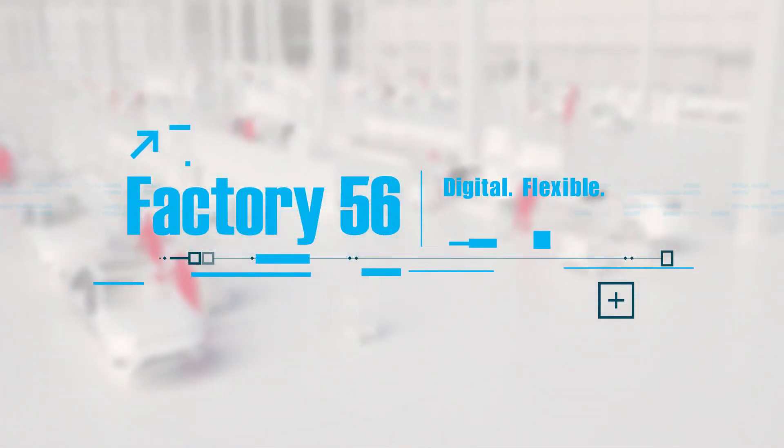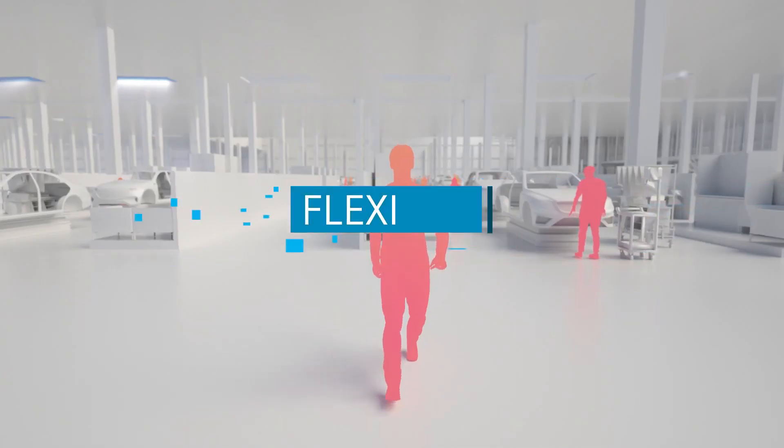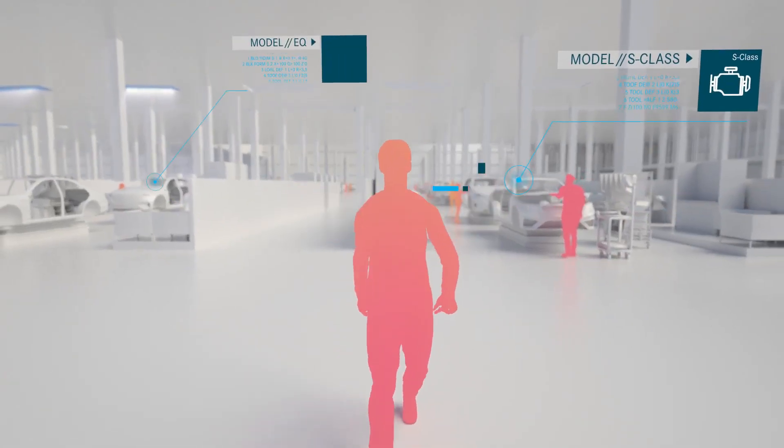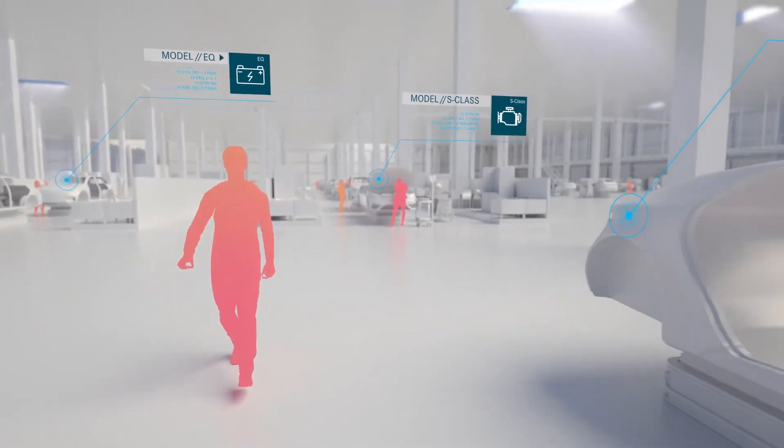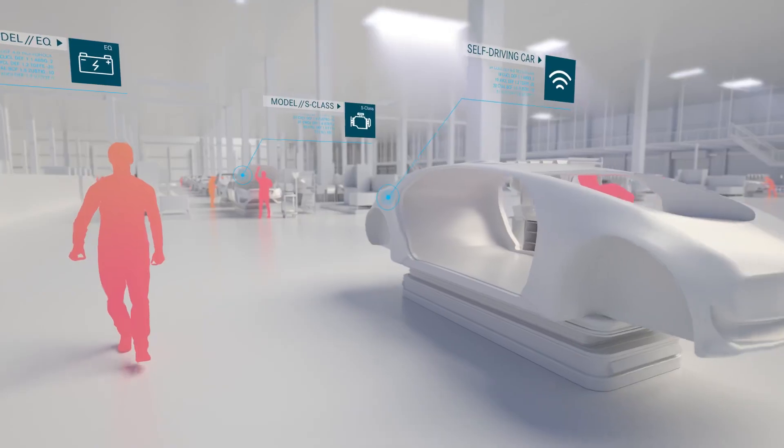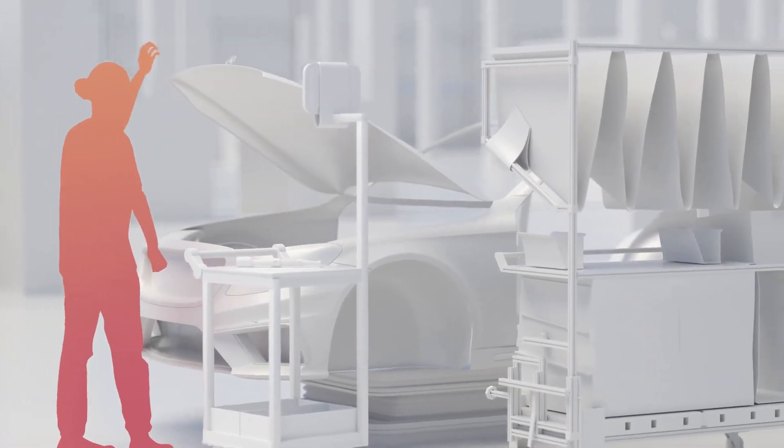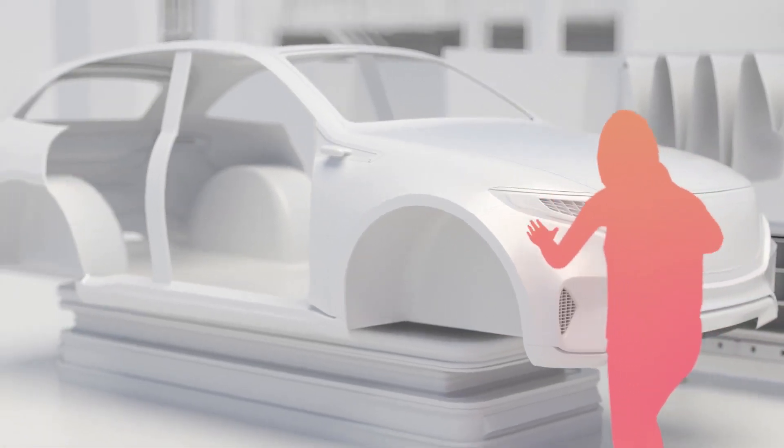Digital, flexible, green. Cars with combustion engines or fully electric vehicles. Different vehicle architectures can be produced on the same assembly line in Factory 56. Our new S-Class, high-end and luxury EQ models.